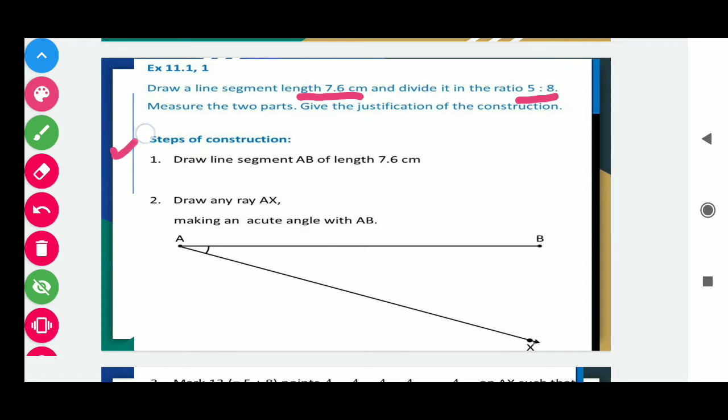Steps of construction are: First, draw the line segment AB of length 7.6 cm. Here you can see I have made a line AB that must be 7.6 cm. Be careful about the exact length of AB.